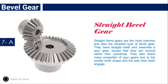Straight bevel gear: Straight bevel gears are the most common and also the simplest type of bevel gear. They have straight teeth and resemble a spur gear except that they are conical rather than cylindrical. They also share many properties of spur gears due to the similar tooth shape and the way their teeth engage.